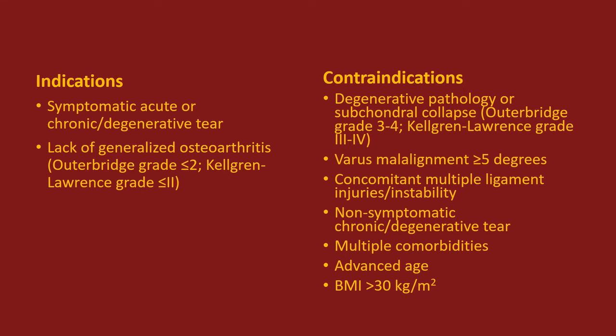Contraindications include degenerative pathology or subchondral collapse consistent with Outerbridge or Kellgren-Lawrence grade 3 or 4, varus malalignment greater than or equal to 5 degrees, concomitant multi-ligament injuries or instability, and non-symptomatic chronic or degenerative tears. Relative contraindications include multiple comorbidities, advanced age, BMI greater than 30, and an inability to participate with a structured rehabilitation program.